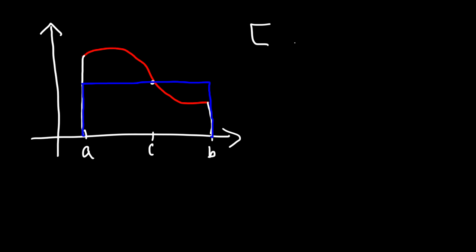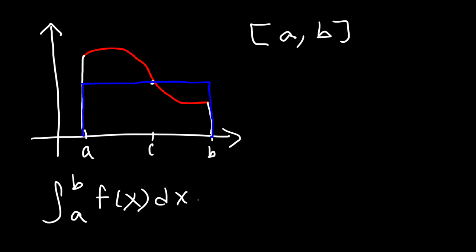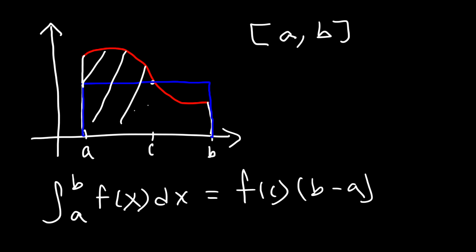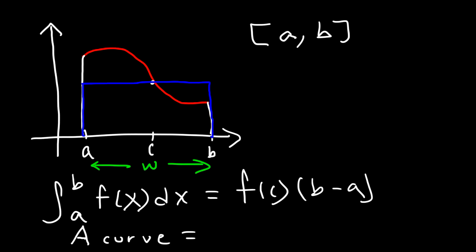If the function is continuous on the closed interval AB, and C is in that interval, then according to the mean value theorem, the definite integral of f(x) dx from A to B is equal to f(C) times (B minus A). The definite integral represents the area under the curve. B minus A represents the width of the rectangle, and f(C) is a y-value representing the height of the rectangle. Width times height gives us the area of the rectangle.